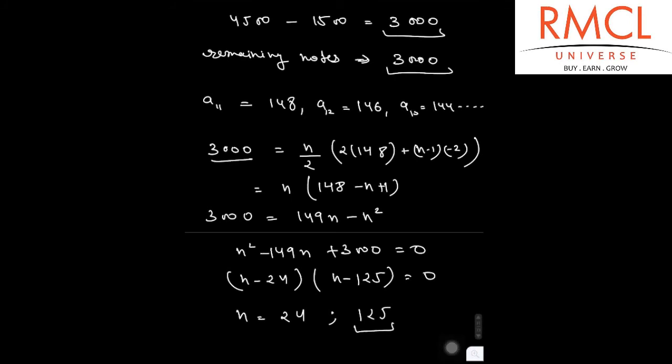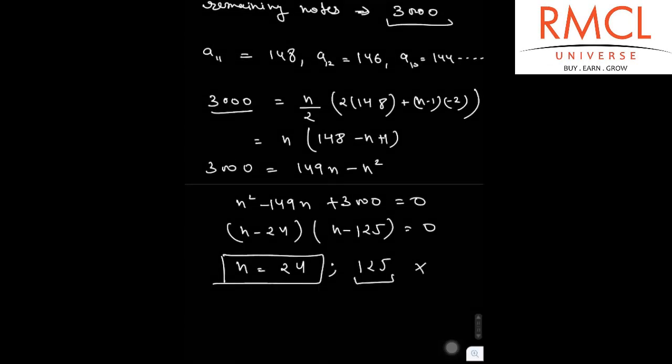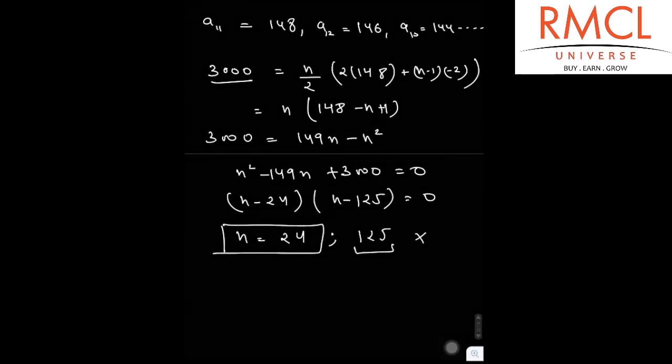But the value of 125 is not possible. Therefore we will take the value of N, that is 24. The value of N is 24.